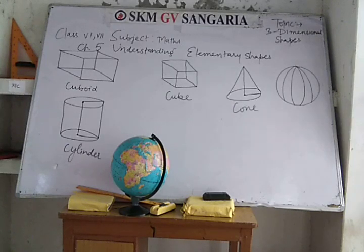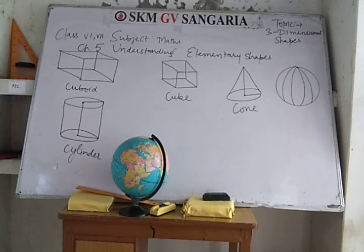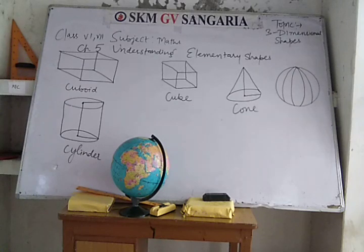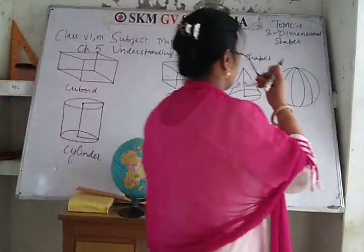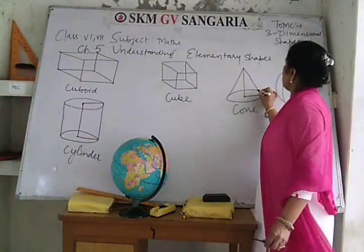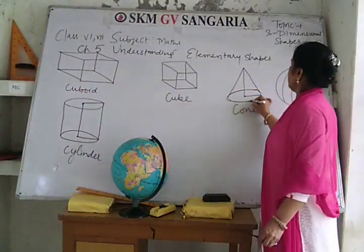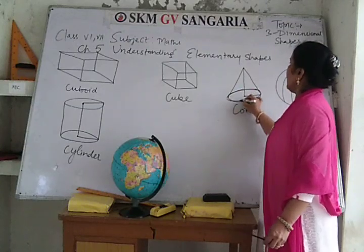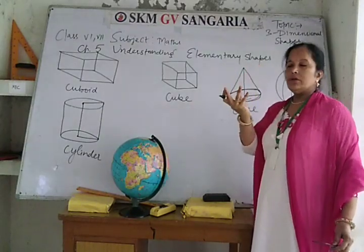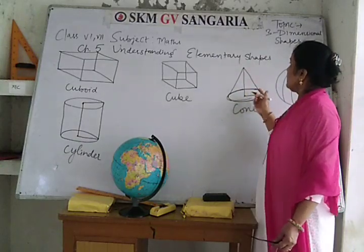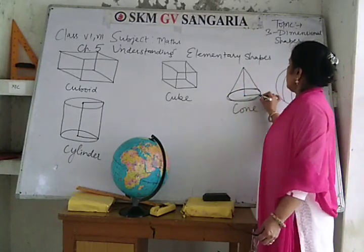Cone is a solid with a circular base. It has a flat surface at the base and the other face is curved. It has no straight edge. Its base is circular and it is also curved.